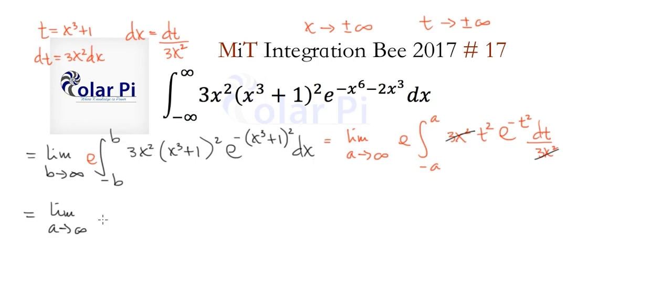We go, limit as a goes to infinity, and then the e that we needed to have. I did one little thing, which is I wrote this t squared as t times t, where I've grouped the second t in this part. You'll see why I wanted to do that, but it's basically because we're going to do integration by parts.